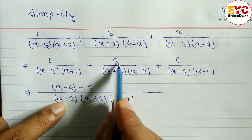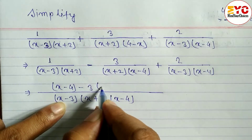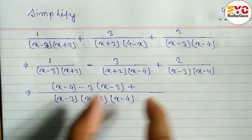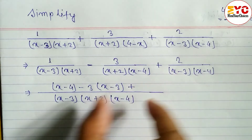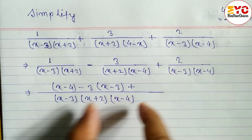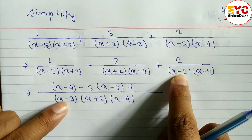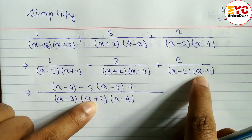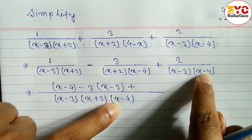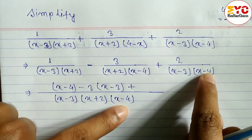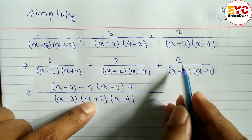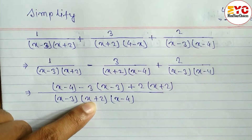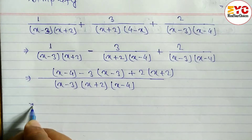Here is plus so we write plus. Again for the third term: x minus 3 cancels, x minus 4 cancels — remaining is x plus 2. We multiply by 2, so we write 2(x plus 2). Now we open the brackets: x minus 4, minus 3(x minus 3) gives minus 3x plus 9, plus 2(x plus 2) gives 2x plus 4.